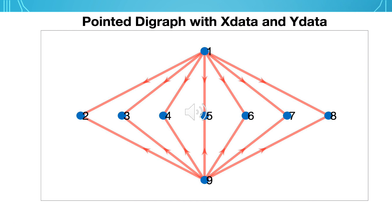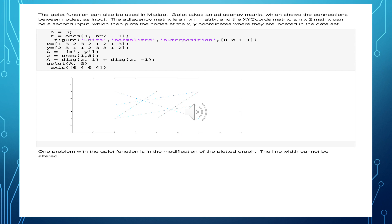This is the graph we previously looked at using the layout called circle. The gplot function is another function that can be used in MATLAB for plotting graphs. Gplot takes an adjacency matrix, which shows the connections between the nodes, as an input. The adjacency matrix is an N-by-N matrix, and the XY coordinates matrix, an N-by-2 matrix, can be a second input. When that is used, the graph plots the XY coordinates where they are located in the data set.